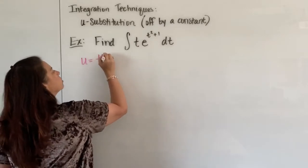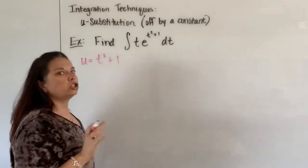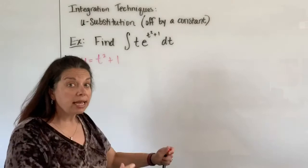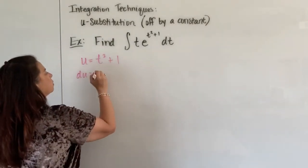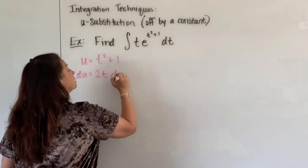So we have u is equal to t squared plus one. Just like before we're going to take the derivative of this statement here. So now we have du equals 2t dt.